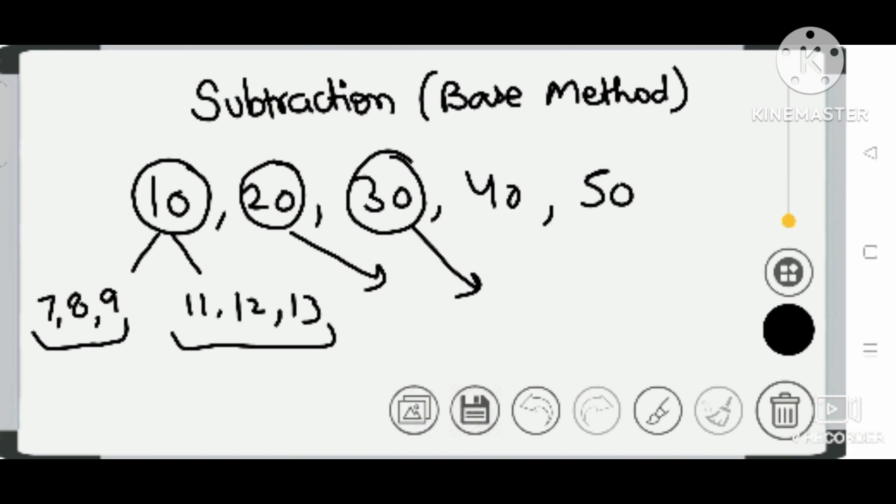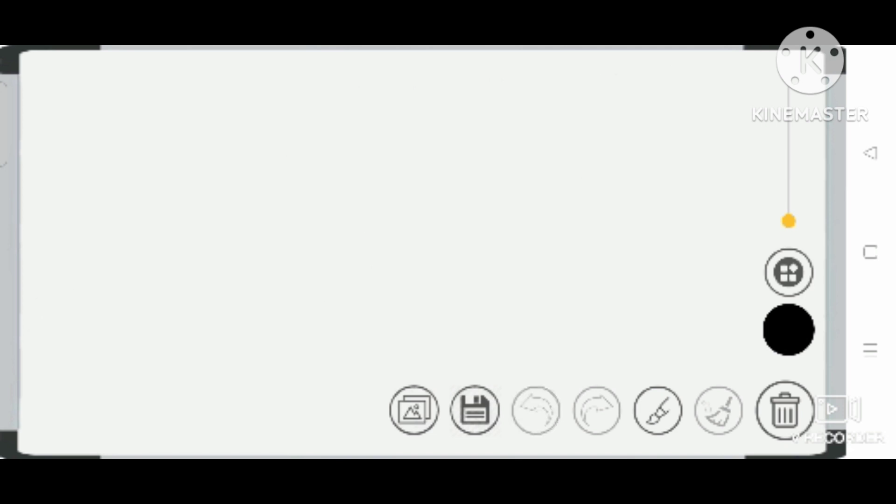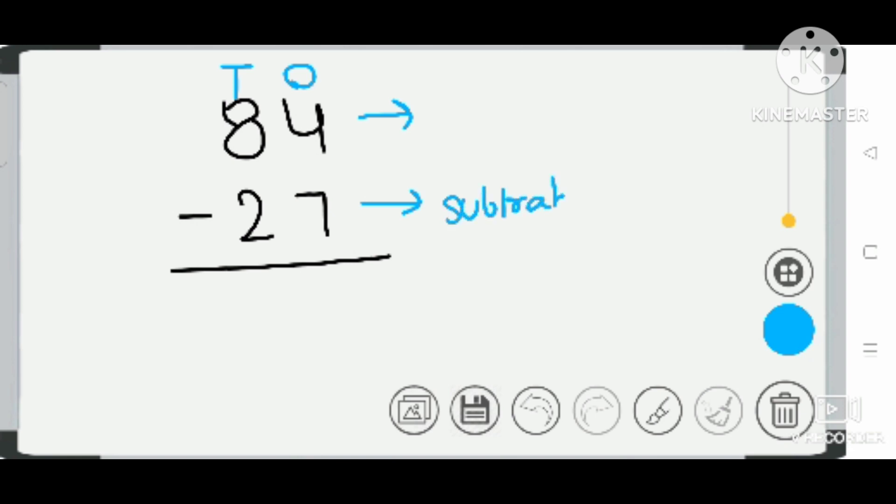Taking one example: we have the question 84 minus 27. This is one's place and this is ten's place. What you do is identify - this is the subtrahend and this is the minuend. First you see